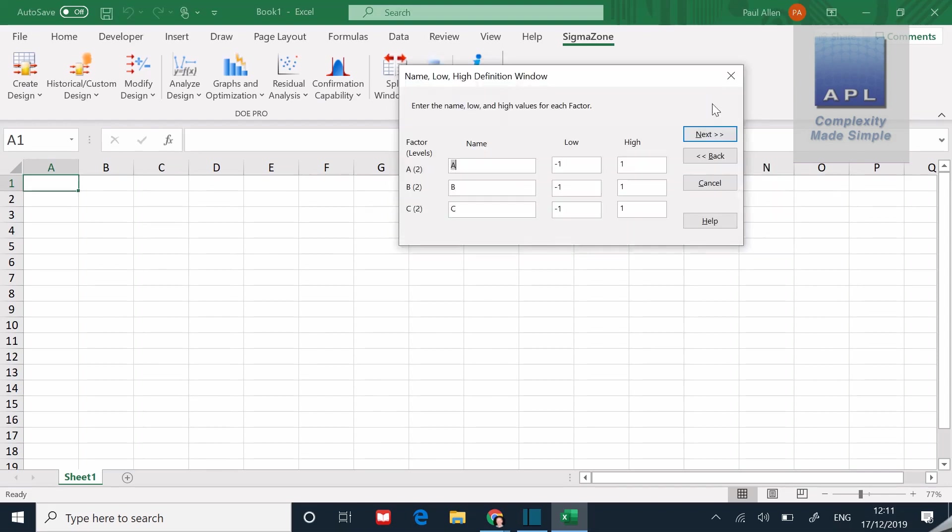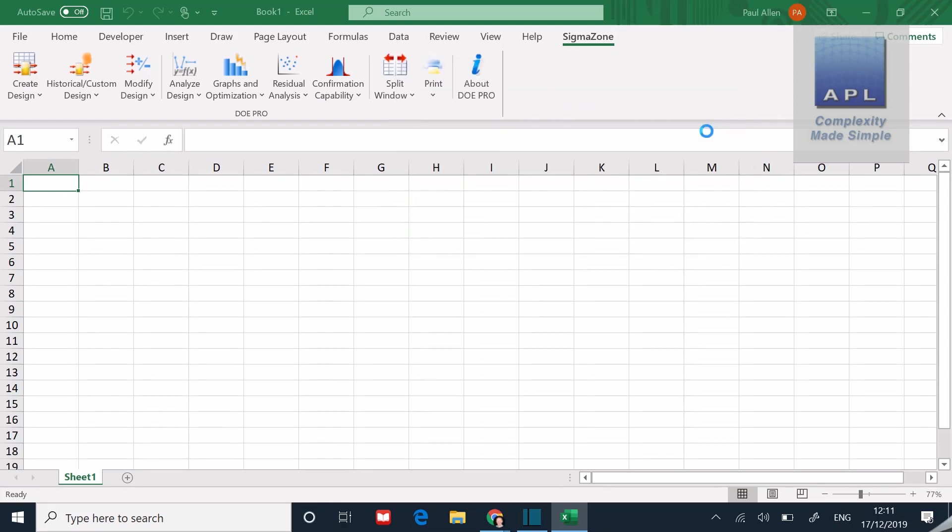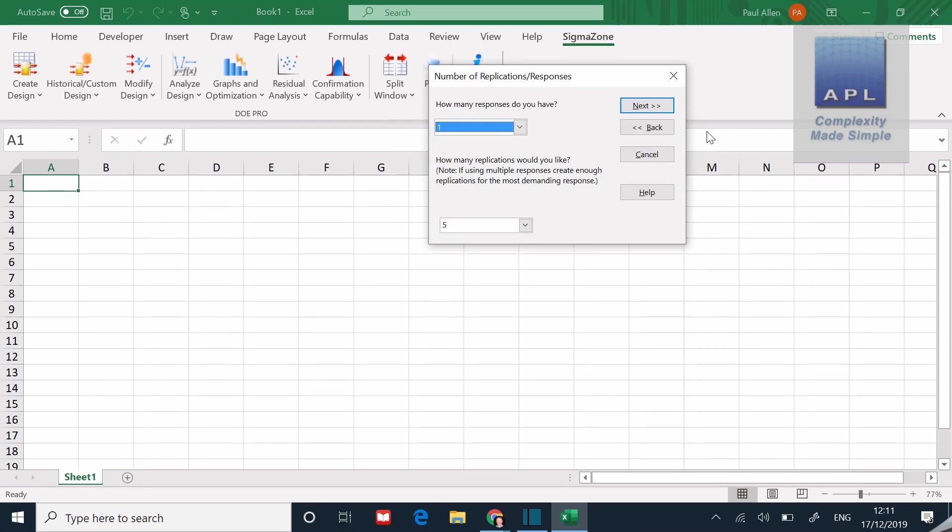If I select that, it then asks me for the three factors: time, temperature, and pressure. I'll put those in now. So time at five and ten, temperature at 70 and 90, and pressure at 100 and 200. So I put those in and I click next. And it then says to me, how many responses do you have? So how many replicates would you like? This is the sample size. If I drop the menu down, I can now change that from one response to three responses.